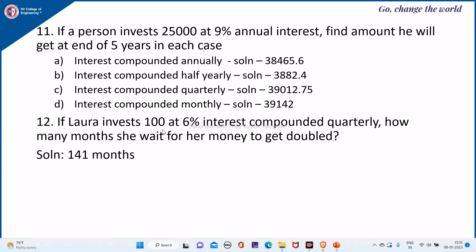Next problem: if Nara invests 100 rupees at 6% interest compounded quarterly, how many months does she have to wait for her money to get doubled? Here P0 is 100 and the rate of interest is 6% per annum, which has to be converted into quarterly, so it is 6 divided by 400 as the r value. n has to be computed with Pn given as 2 times P0. By substituting the given values, the answer is 141 months.